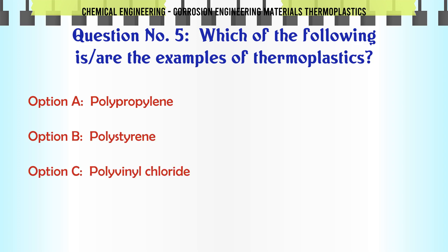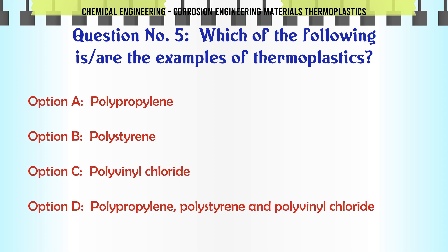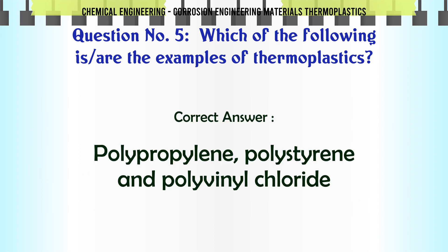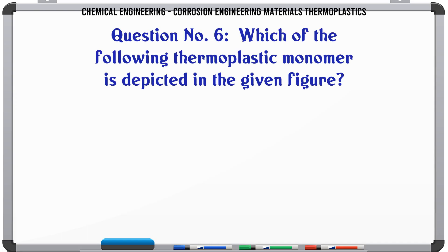Which of the following is/are the examples of thermoplastics? A. Polypropylene, B. Polystyrene, C. Polyvinyl chloride, D. Polypropylene, polystyrene, and polyvinyl chloride. The correct answer is polypropylene, polystyrene, and polyvinyl chloride.